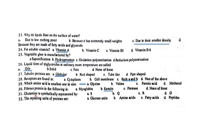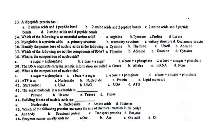Glutamine is symbolically represented by Q. The repeating unit of proteins is amino acids. A dipeptide is made of two amino acids. Which of the following is an essential amino acid?